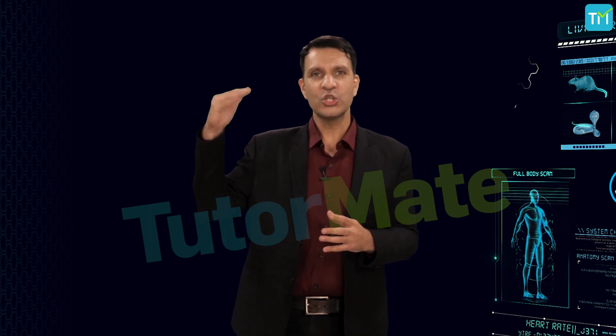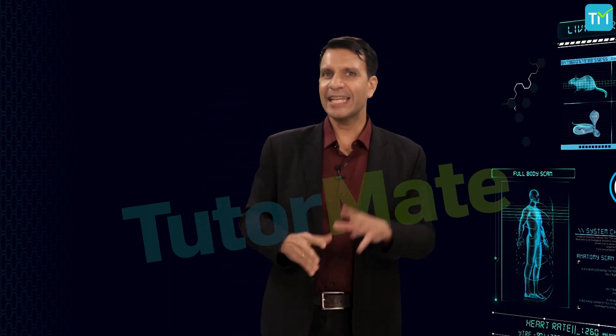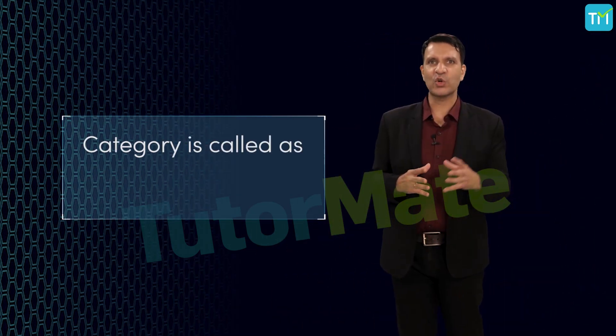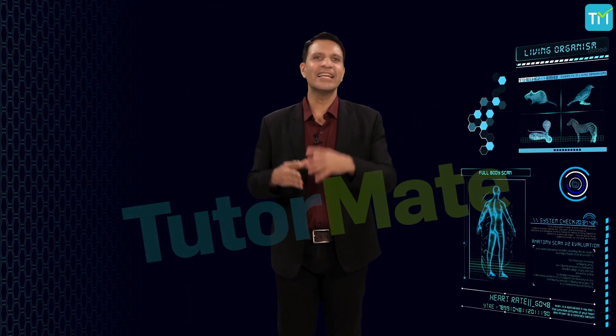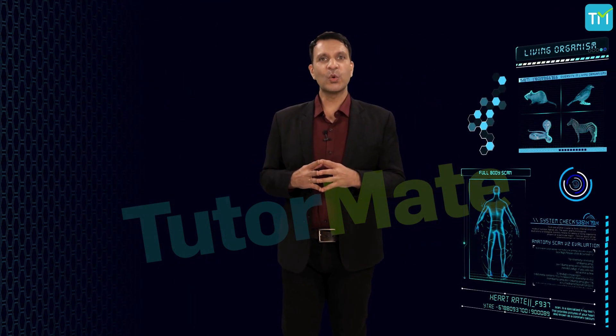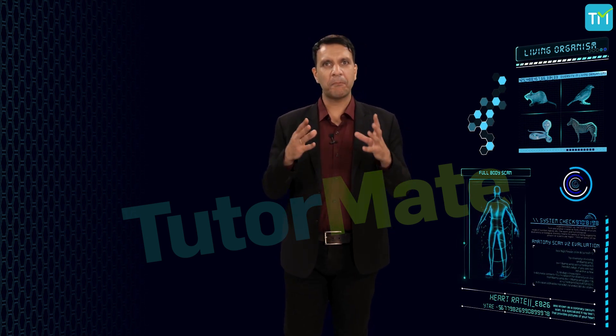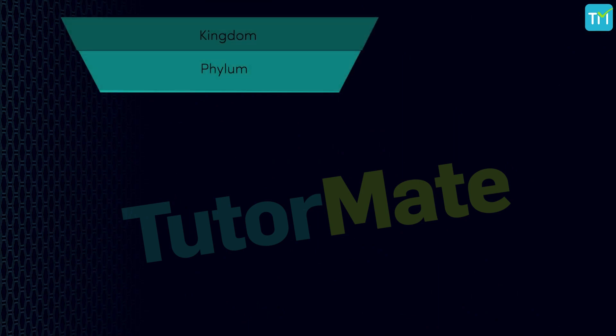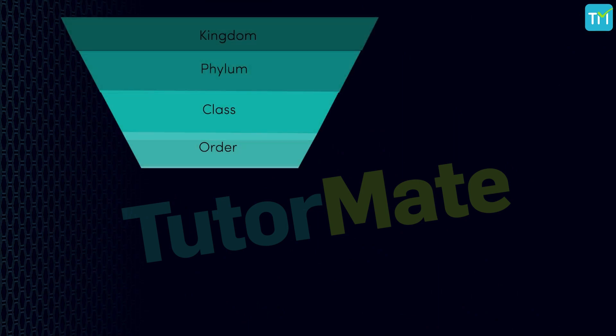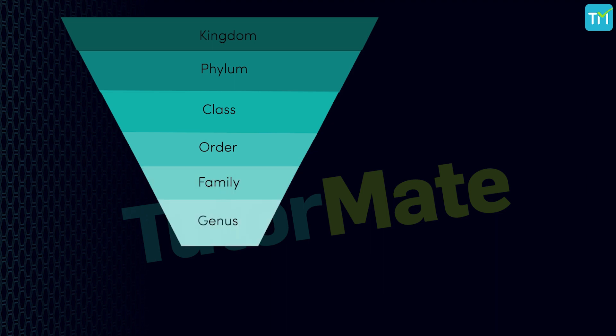Now in biology, a category is called a taxon. The plural form of taxon is taxa. So the taxa used in classification of plants and animals are Kingdom, Phylum, Class, Order, Family, Genus, and Species. However, as you can see here, in case of plants, the term Division is used in place of Phylum.